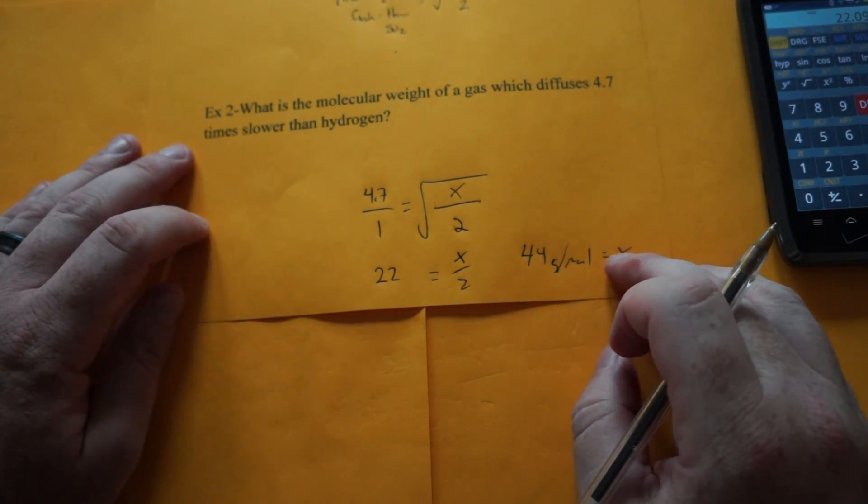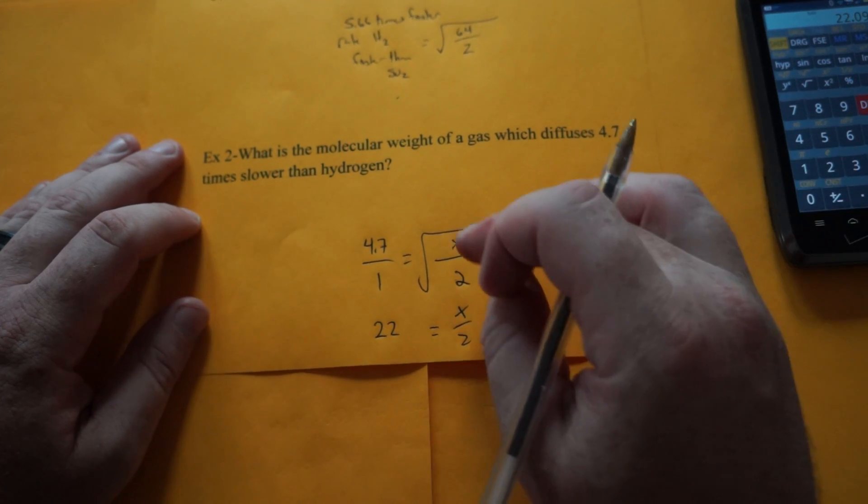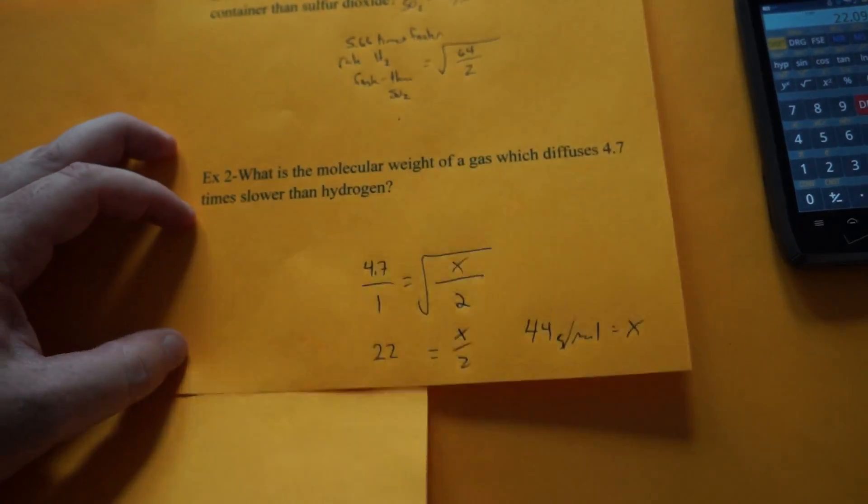Sounds like CO2, which is 44 grams per mole. And that's how Graham's Law of Effusion works. Sometimes we have to solve for inside the square root, so square the other side. And that's Graham's Law.